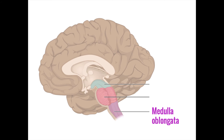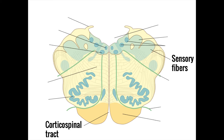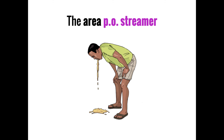The medulla oblongata is the lowest part of the brainstem. Like the midbrain and pons, the tracts carrying motor and sensory information continue here. The medulla also contains several reflex centers, most of which involve either keeping good things in or pushing bad things out. The vomiting reflex lies in an area known as the area postrema, which initiates this process when it detects a potential toxin in the mouth. You can remember the area postrema by thinking of it as a PO streamer — with PO, or per os, being common medical jargon for by mouth.